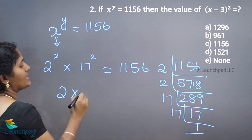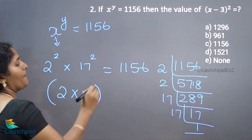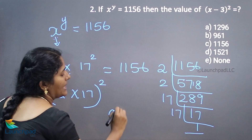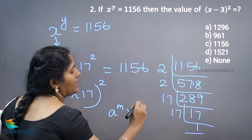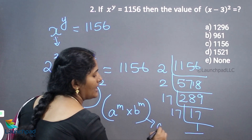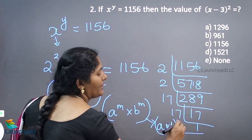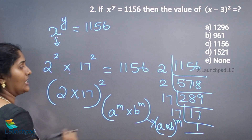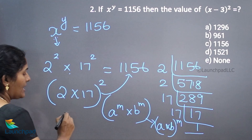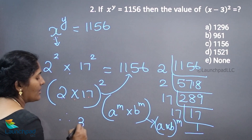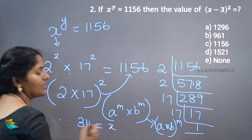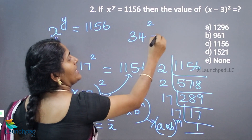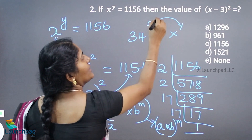I can take 2 into 17, the whole power 2. Using the rule A^M into B^M equals (A into B) the whole power M, here 2 into 17 the whole square equals 1156. Hence 2 into 17 is 34, so x value is 34. Here x is 34 and y is 2.